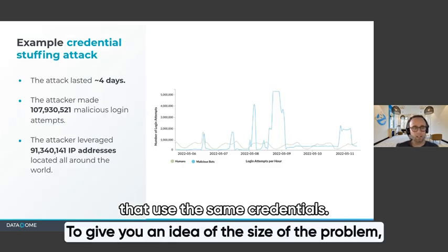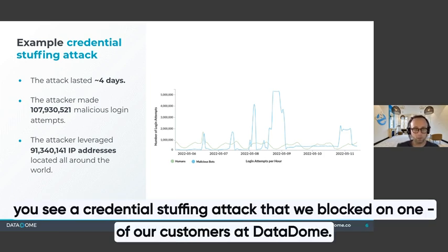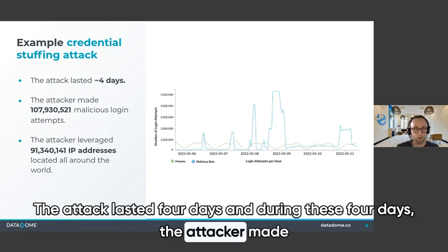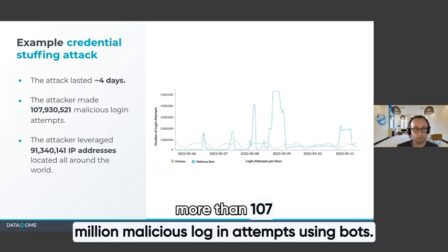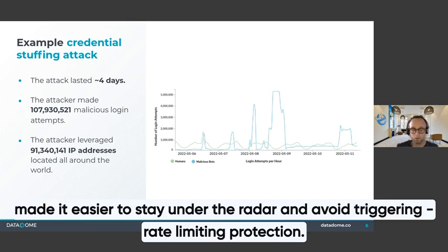To give you an idea of the size of the problem: on this slide, I show a credential stuffing attack that we blocked on one of our customers at Datadome. The attack lasted four days, and during those four days, the attacker made more than 107 million malicious login attempts using bots. He leveraged more than 91 million IP addresses located all around the world, which is typically used to stay under the radar and avoid triggering rate limiting protections.